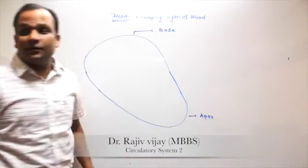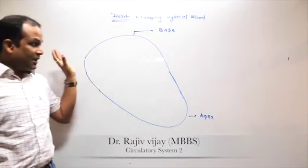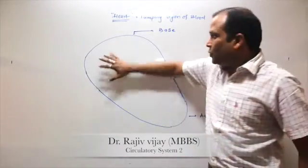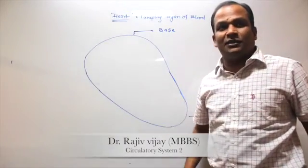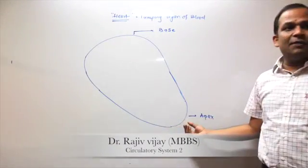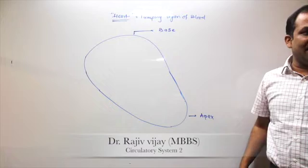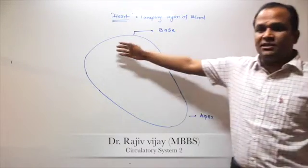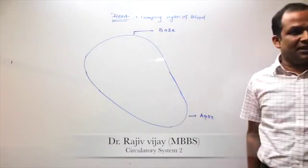Apex of heart. If I look at the triangular section or cone-like section, the lower part of the cone is called base, and the upper part is called apex. Here the apex is where? Towards the lower side. And base is where? Towards the upper side.